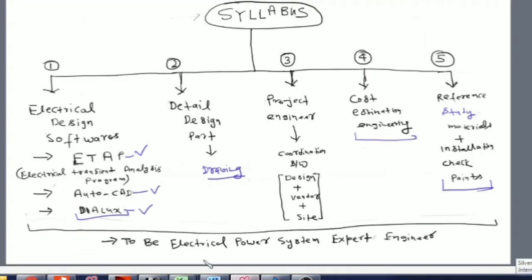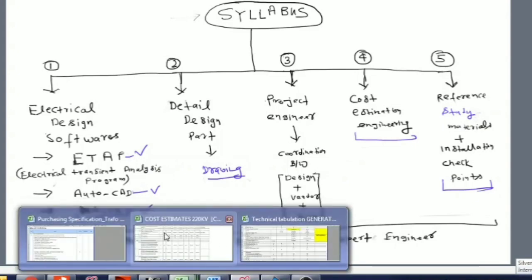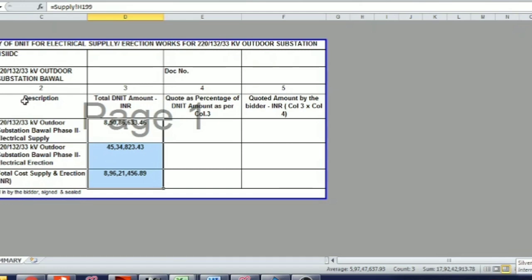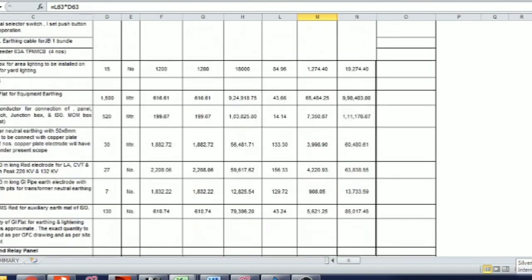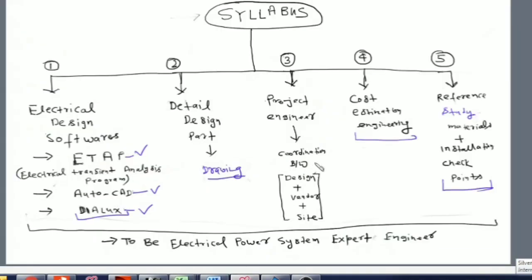Next is cost estimation engineering. We will learn how to estimate costs. Suppose we have a 220 by 132 kilovolt single bay substation. For supply, erection, and total cost breakup - how to do cost estimation, we will discuss in the cost estimation modules.